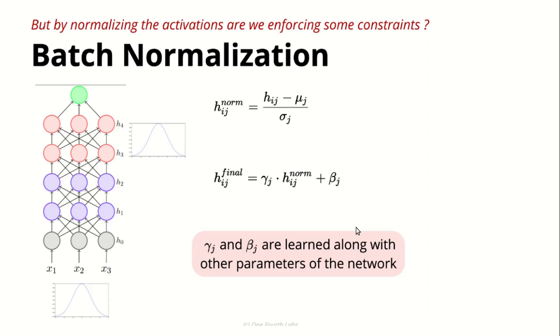For each column, we have gamma and beta. These are the parameters that are learned along the way. By introducing this, the problem that we had - that our network might not need the shape we pre-assumed - is addressed.